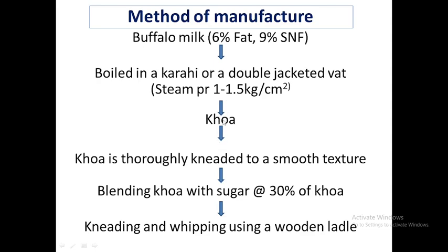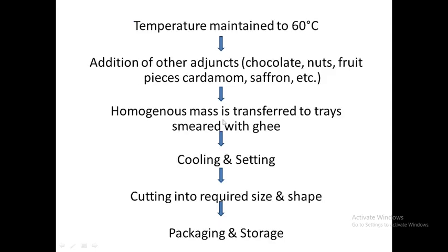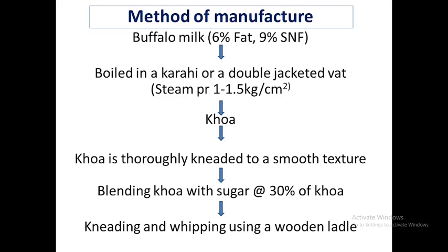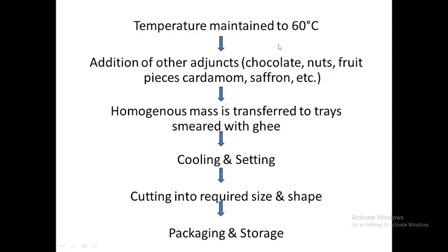This procedure can be initiated from khoa directly — we take khoa, add sugar into it, then knead. Usually the temperature is at 60 degrees centigrade when we mix other ingredients. This temperature is important so as to enable melting of sugar and its uniform distribution. Once it is done, we add additives, or you can also prepare plain burfi. The homogeneous mass is then removed into a greased tray.